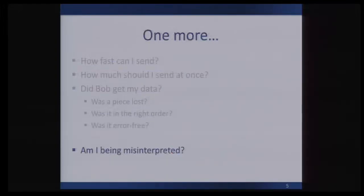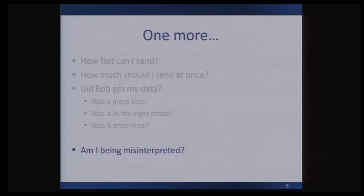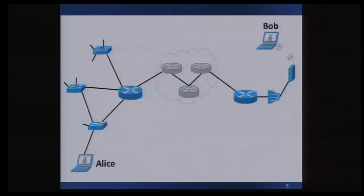We believe that modern TCP needs to know the answer to another question: am I being misinterpreted? In other words, is some new feature that I want to use going to be properly communicated along a path? One way we can check this is by looking at in-flight packet header modifications. The main reason we have to ask this question is because of issues with middleboxes on the network.